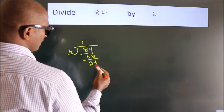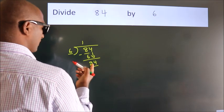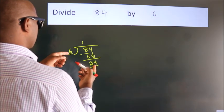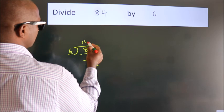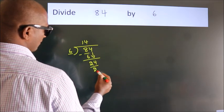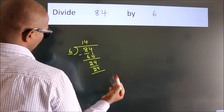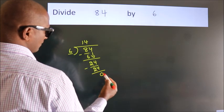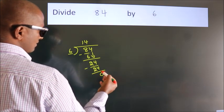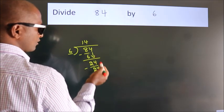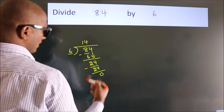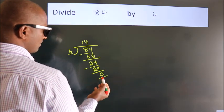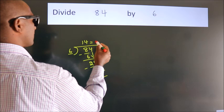Bring 4 down, so we have 24. When do we get 24 in the 6 times table? 6 fours are 24. Now we subtract and we get 0. No more numbers to bring down, and we got remainder 0. So this is our quotient.